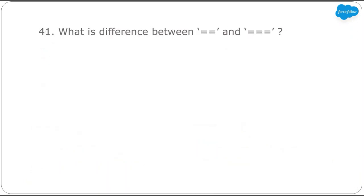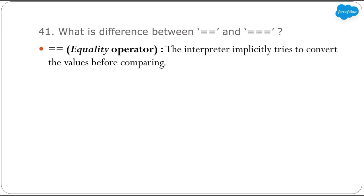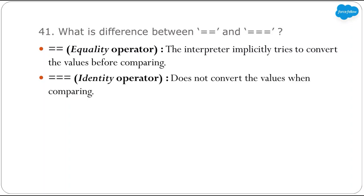Next: what is the difference between double equals (==) and triple equals (===)? We use these operators to compare values of two variables. With double equals (the equality operator), the interpreter implicitly tries to convert the values before comparing — meaning values will be converted to the same data type before comparison. With triple equals (the identity operator), values are not converted to the same data type before comparison.